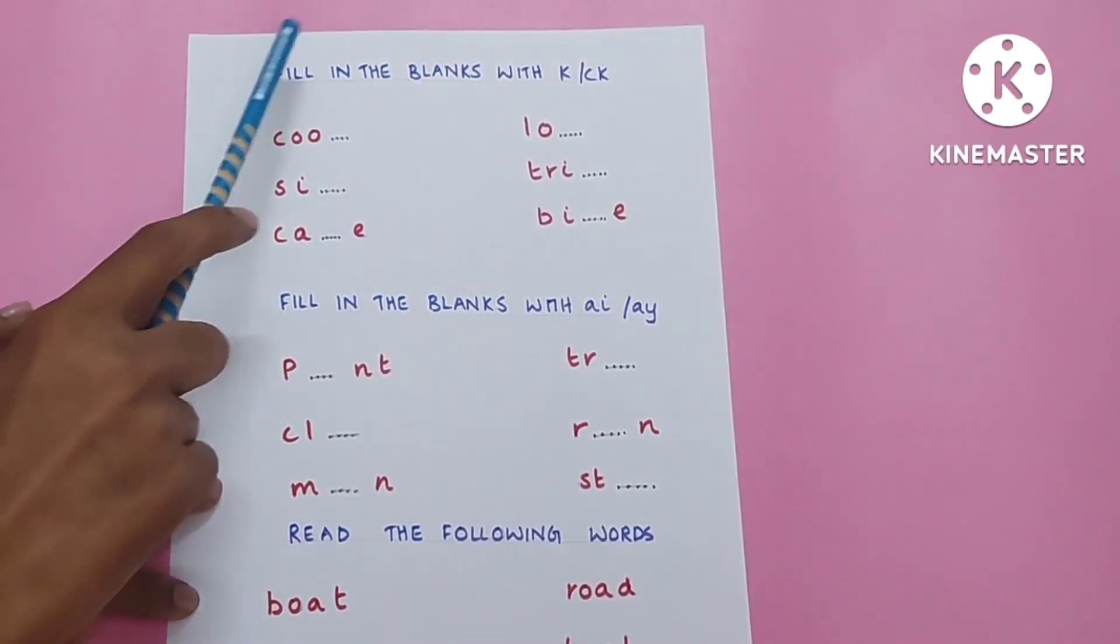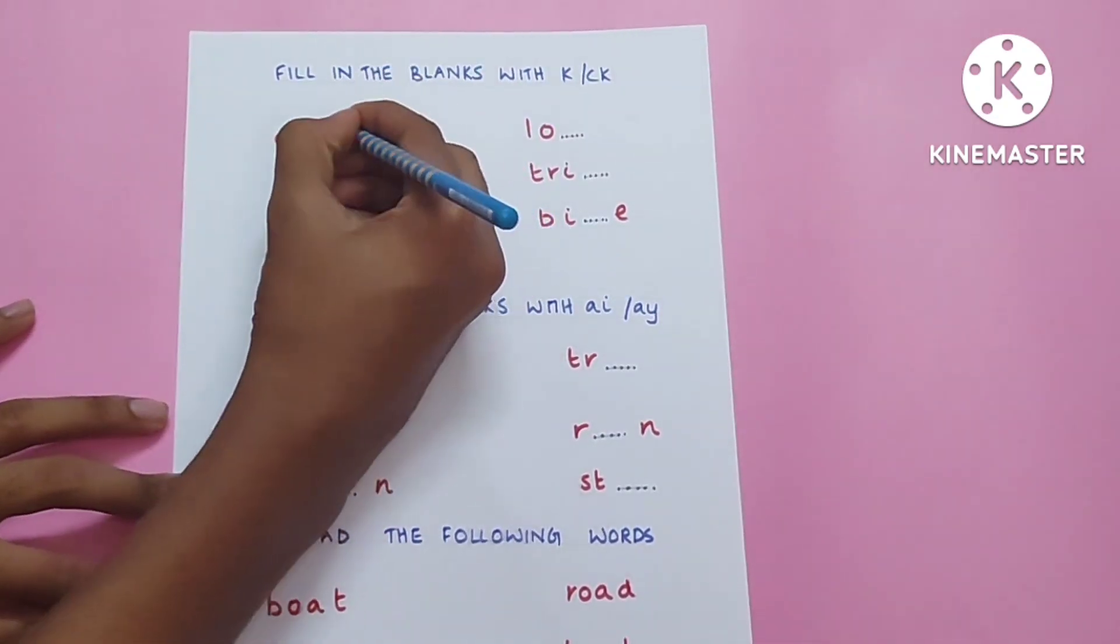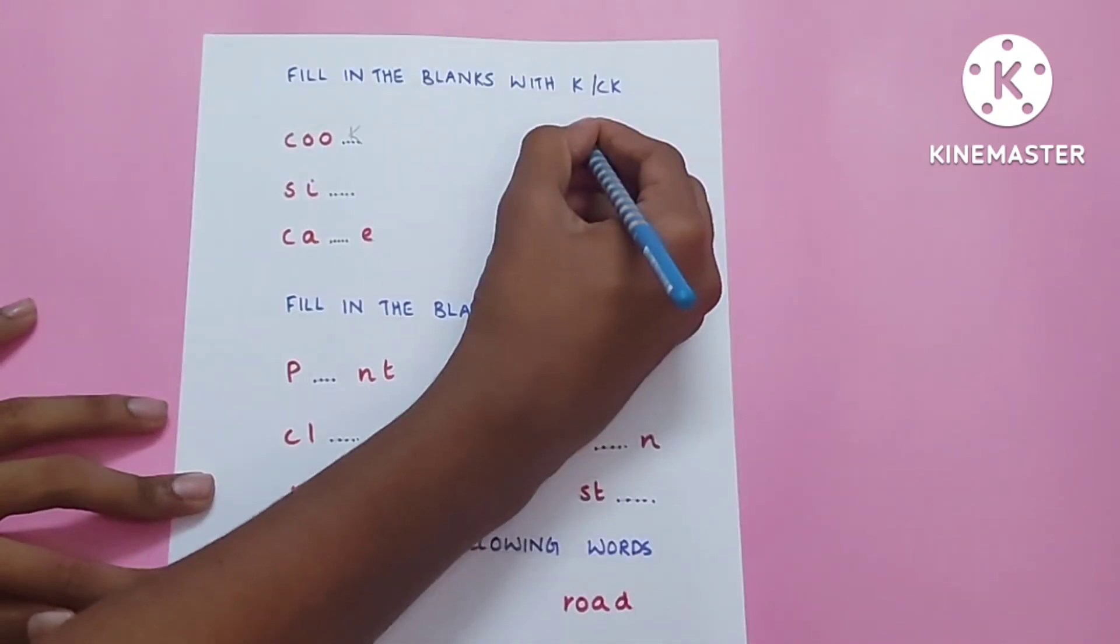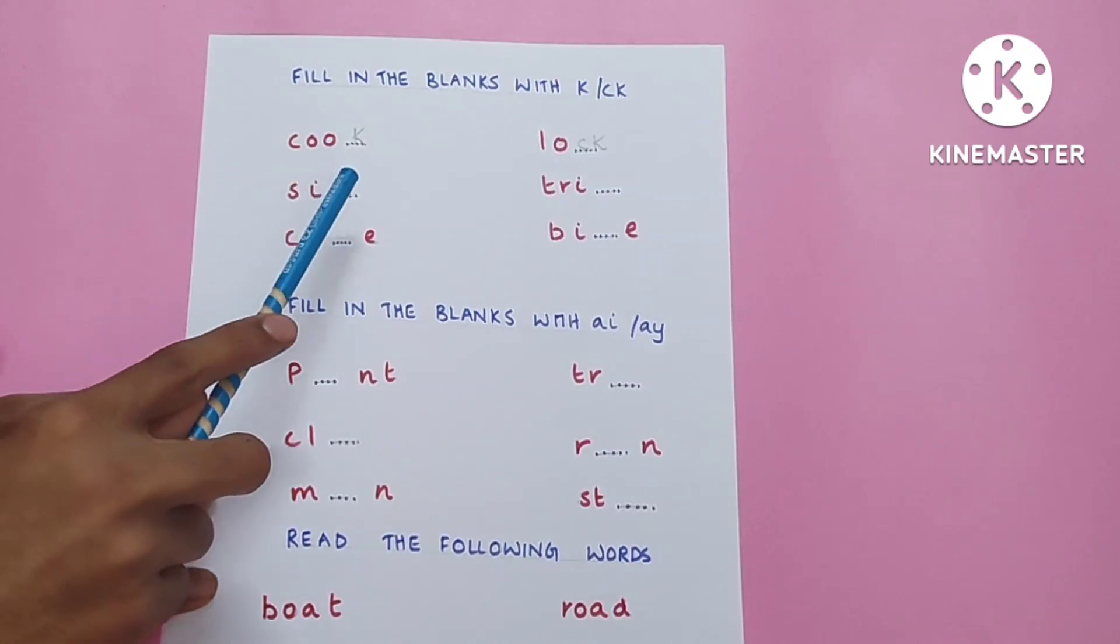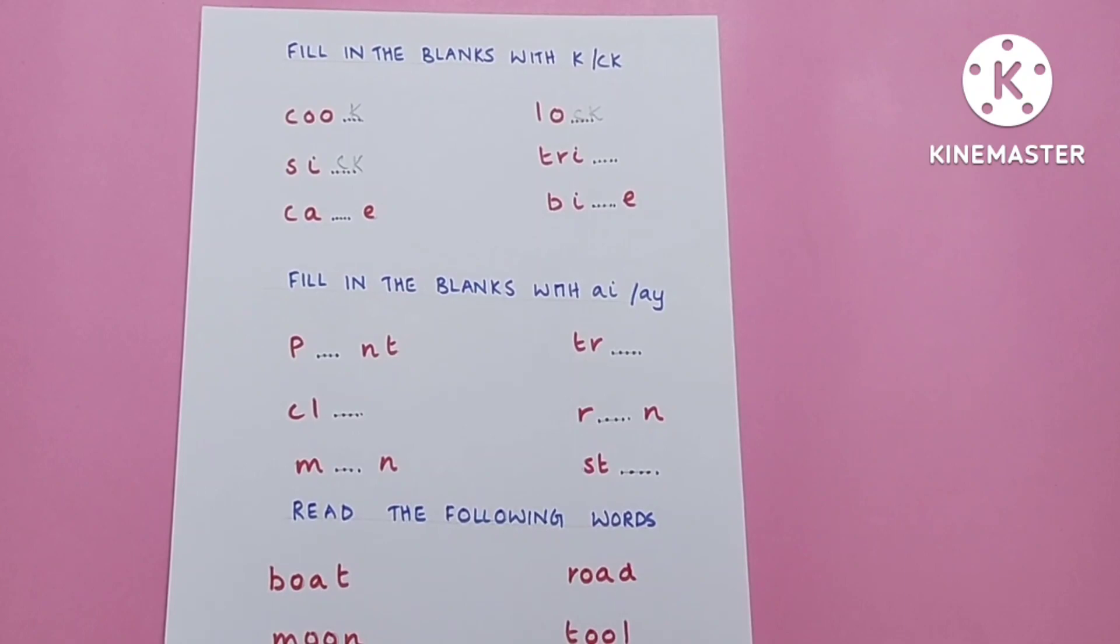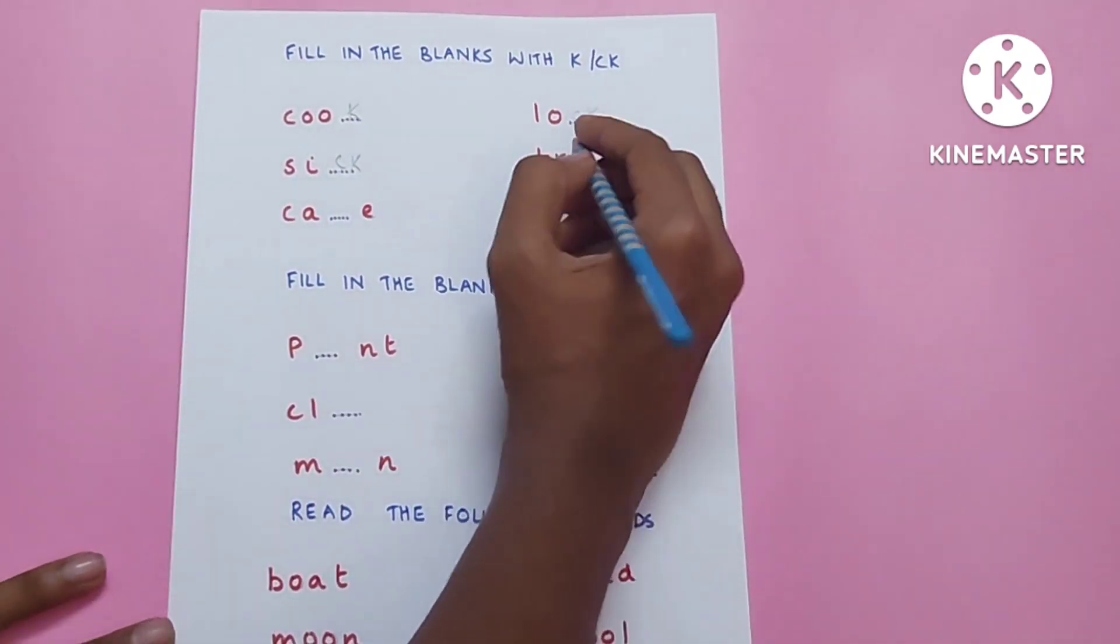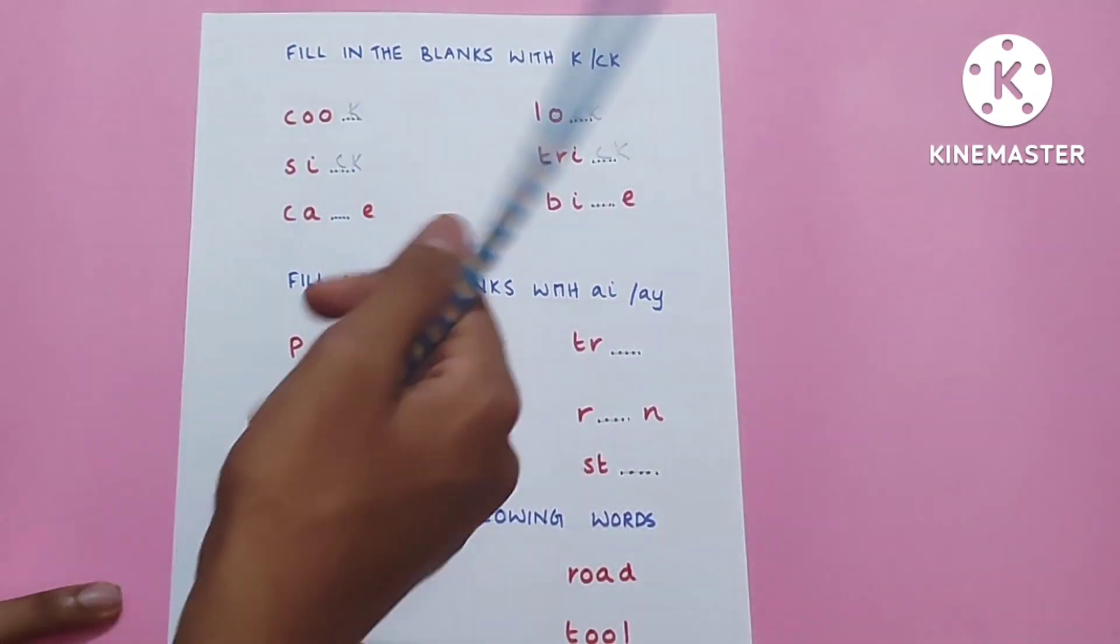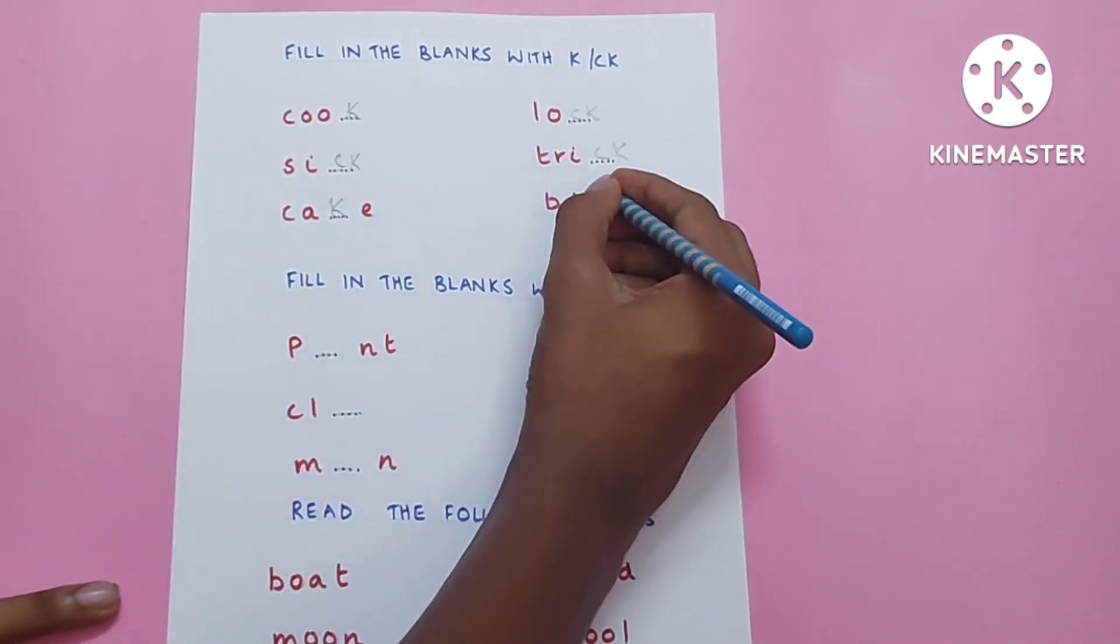Fill in the blanks with K or CK. Cook, K. Lock, CK. Sick, CK. Trick, CK. Cake, K. Bike, K.